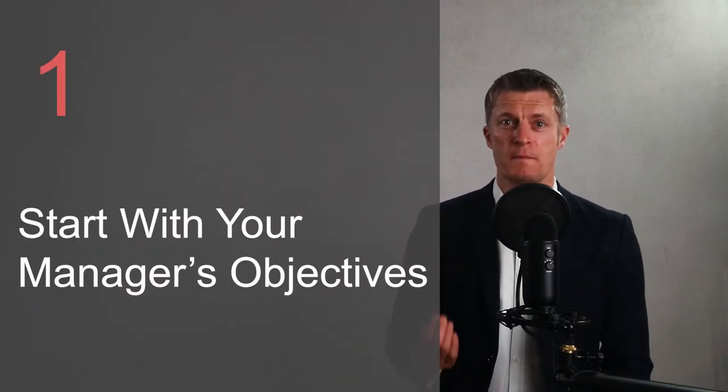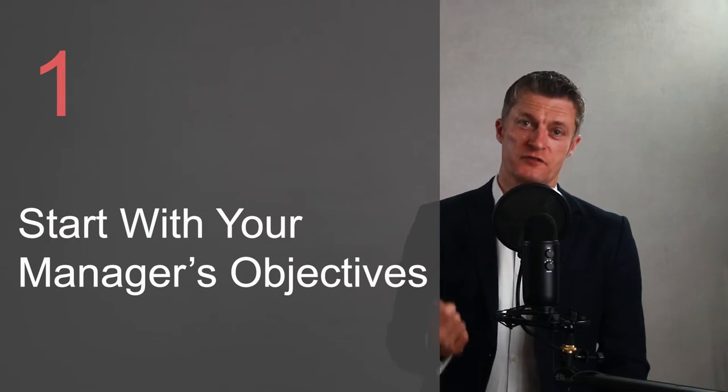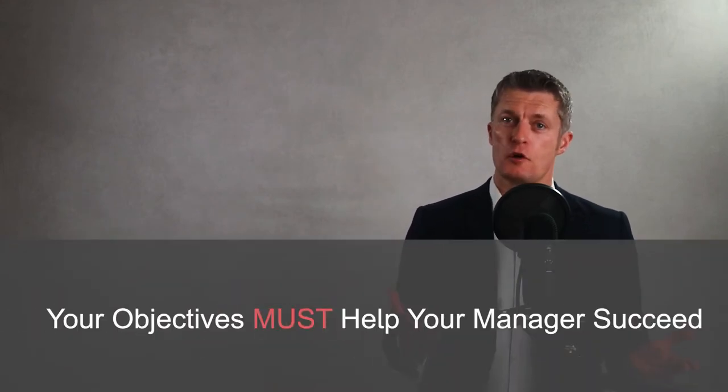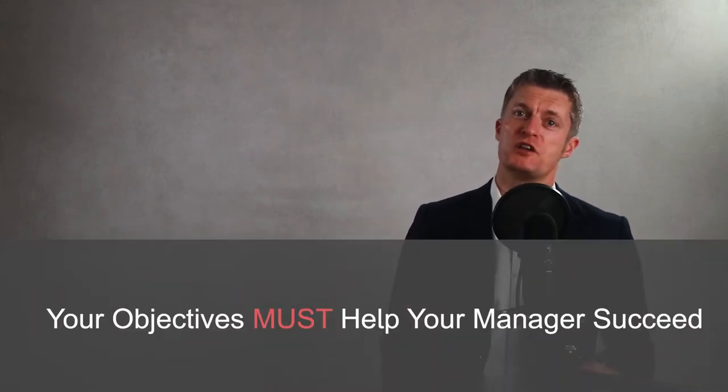The first step when setting objectives with your manager is to start with your manager's objectives or goals. You need your objectives and those of your team to align with your manager's objectives, or at least those that you and your team will be involved in delivering. Your objectives must help your manager achieve their objectives if you want yours to be approved. Ask for a copy of your manager's objectives or the ones that you and your team will be helping to deliver.